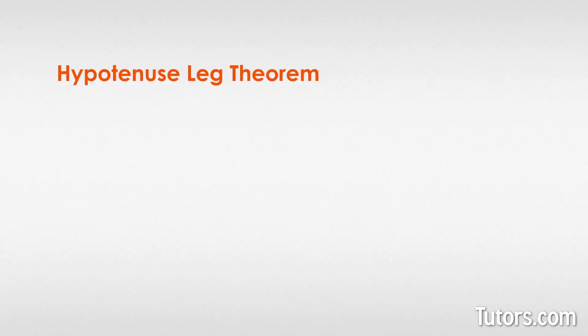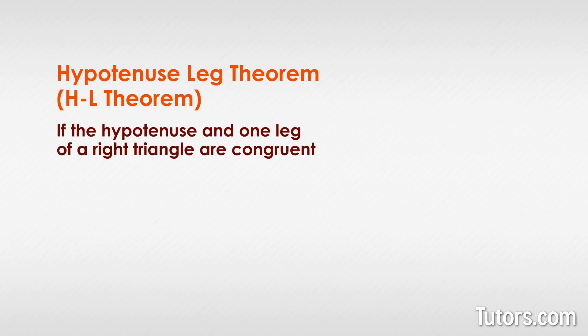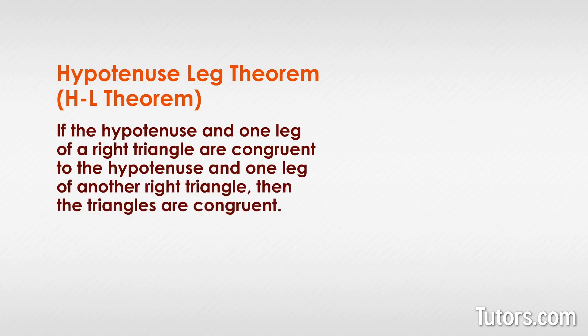The hypotenuse leg theorem, or HL theorem, tells us a similar story. The HL theorem states, if the hypotenuse and one leg of a right triangle are congruent to the hypotenuse and one leg of another right triangle, then the triangles are congruent.